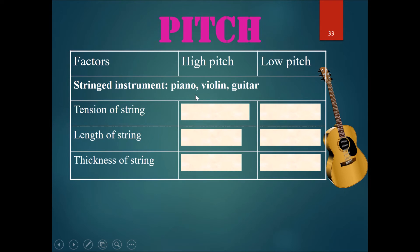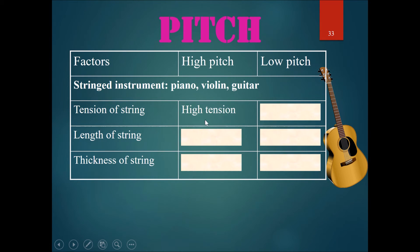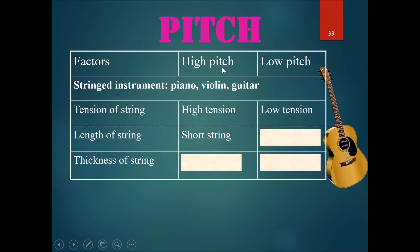For string instruments like the piano, the violin, and the guitar, to make it have a high pitch, you should have a high tension of the string. For a low pitch, you should reduce the tension of the string. For a high pitch, you could shorten the length of the string, like the ukulele.